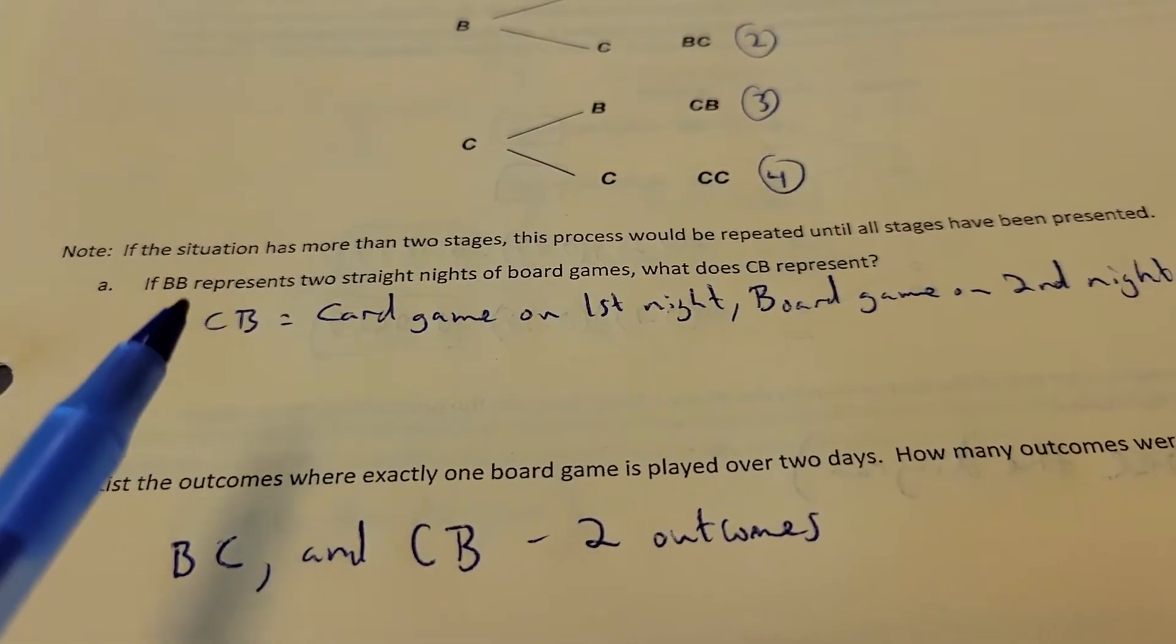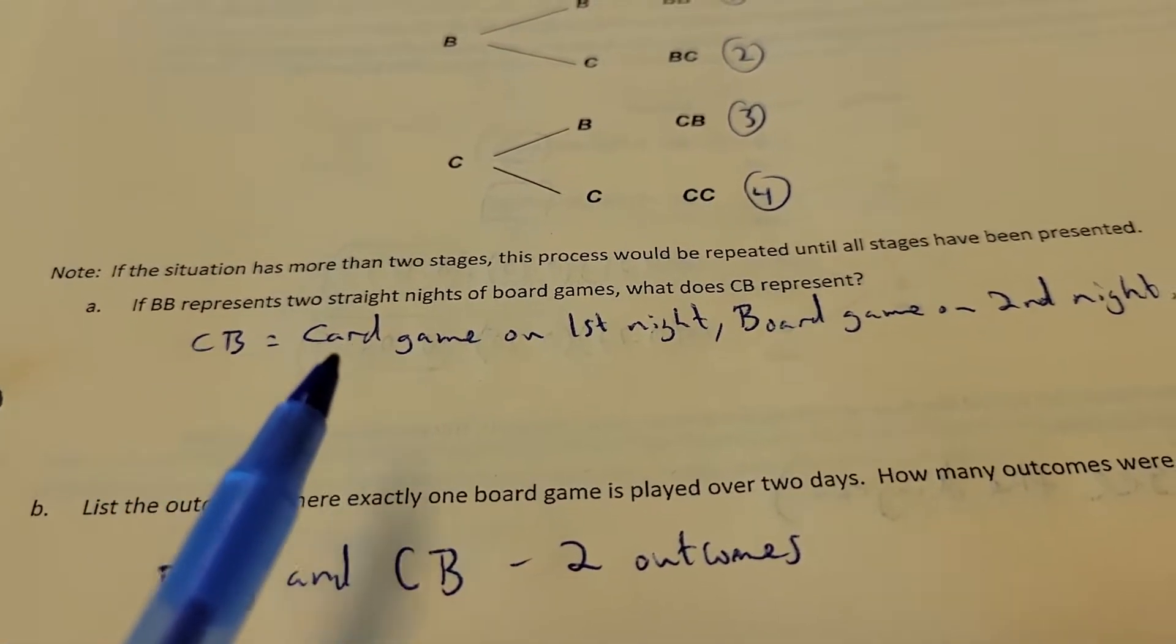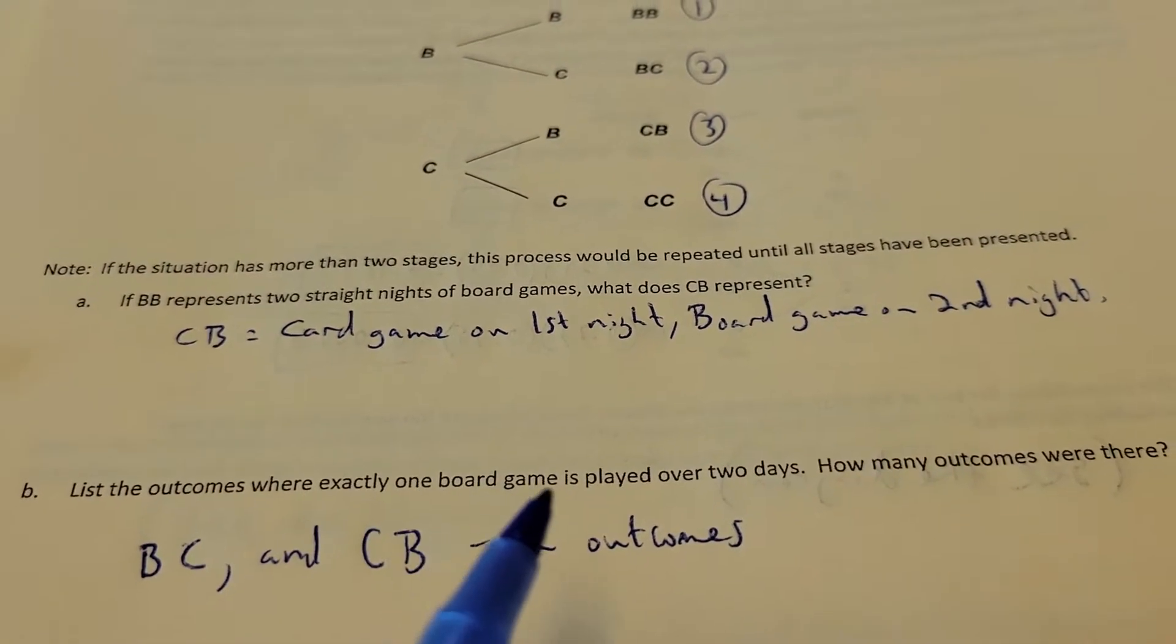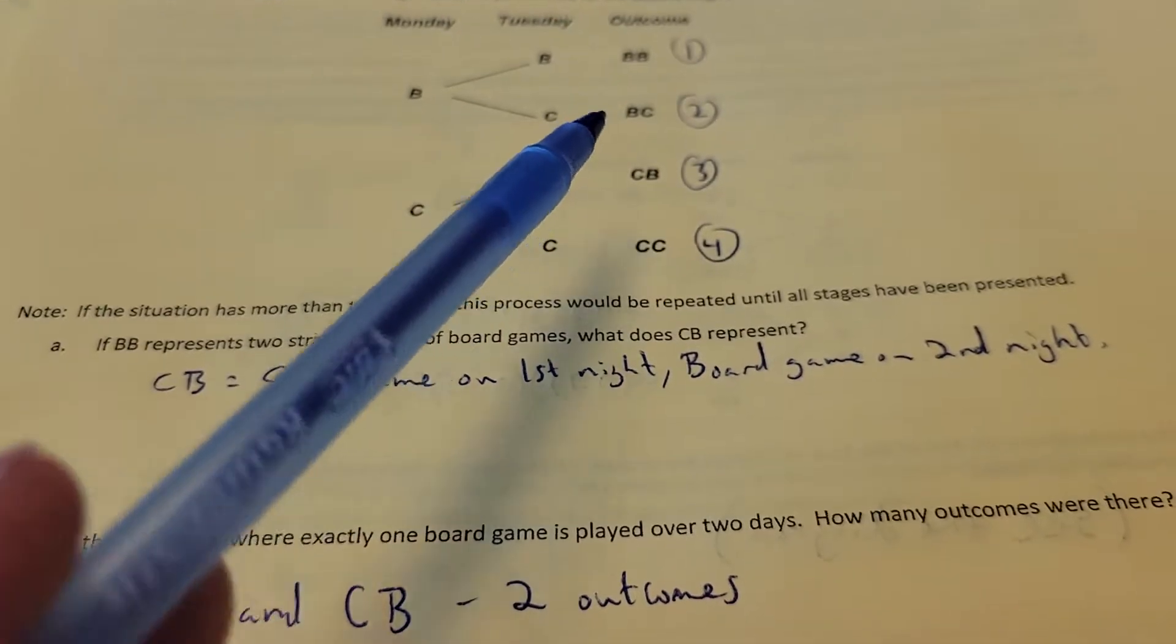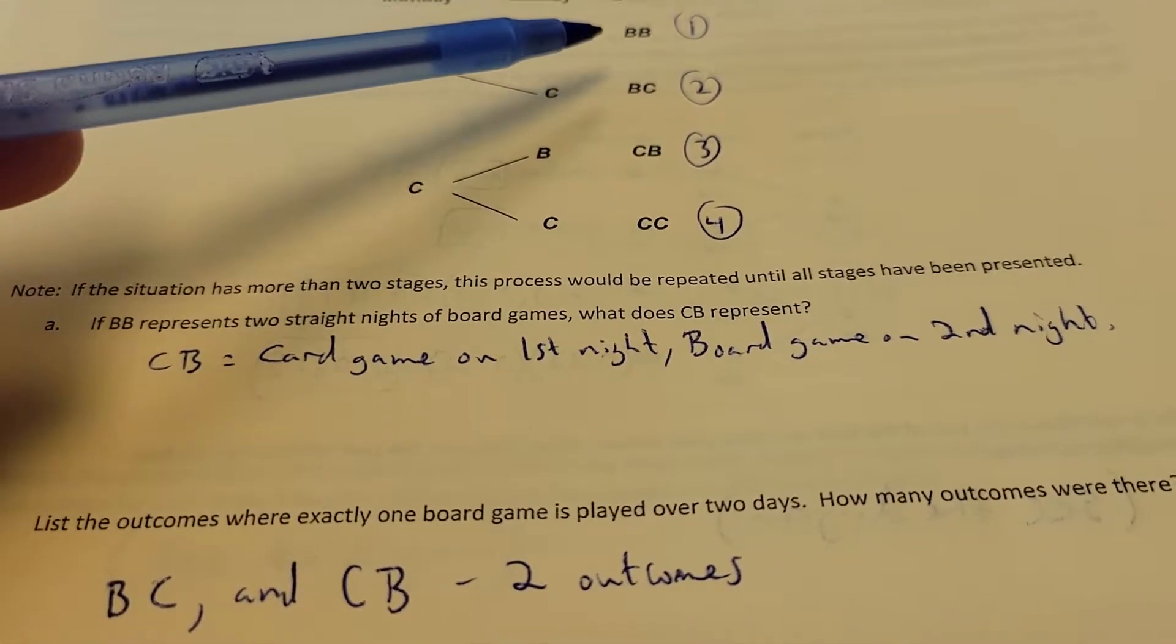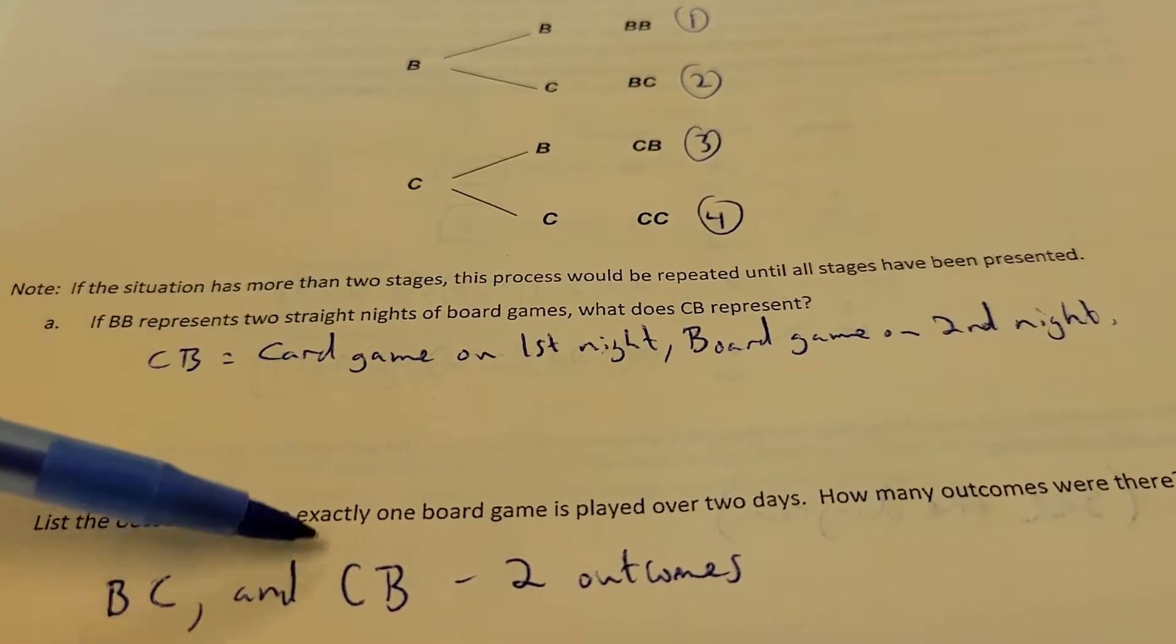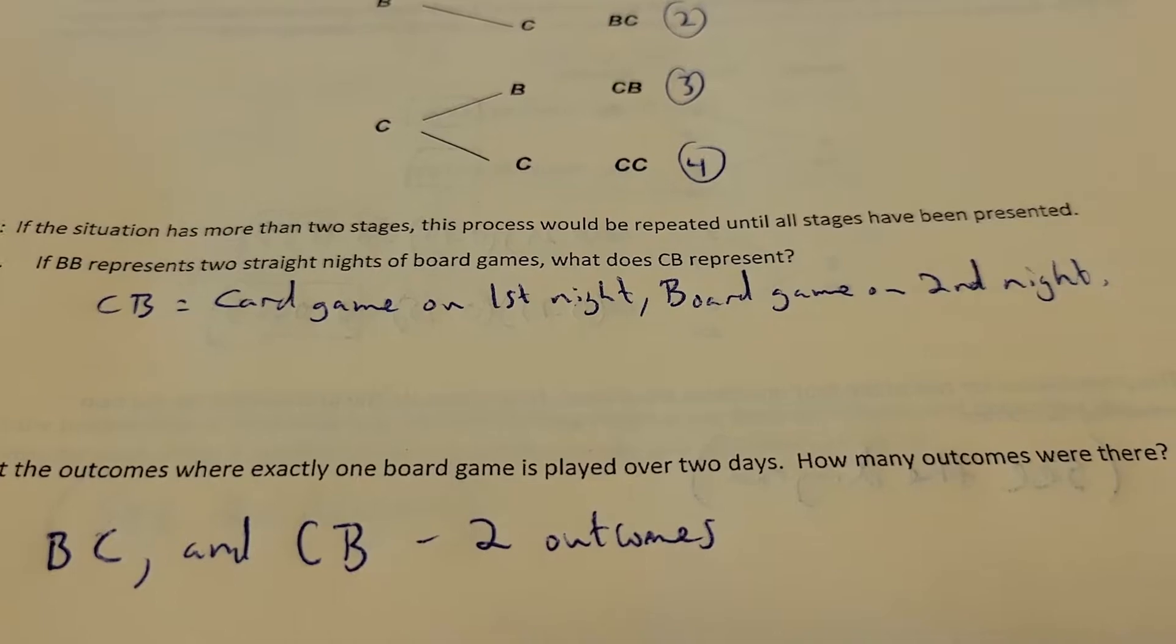On A, it says if BB represents two straight nights of board games, what does CB represent? Well, CB means card game the first night and board game on the second night. List the outcomes where exactly one board game is played over two days. Well, if you look at that, exactly one. That's two of them. There's one board game, there's one board game, and that's it. So I've got BC and CB. There's only two outcomes that show that.